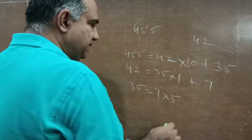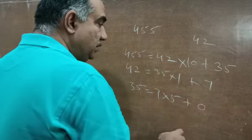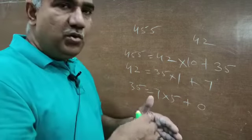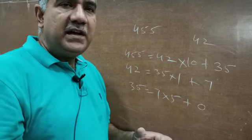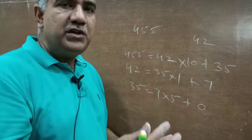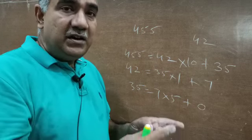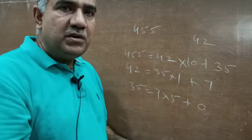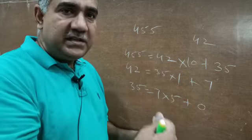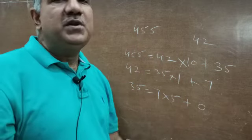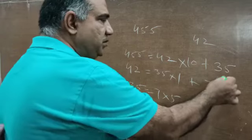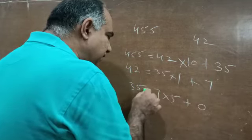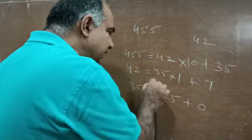Now writing 35 and 7, with remainder 0. This step is most important. According to Euclid's Division Algorithm, when you find the HCF of two quantities using Euclid's Division Lemma — whenever you find that the remainder comes to 0 in a particular step, whatever the divisor is in that step, that is your HCF. Here the remainder first was not 0, then it became 0.